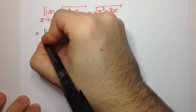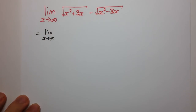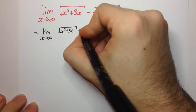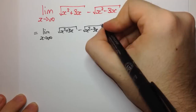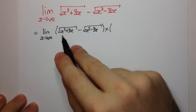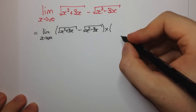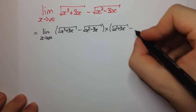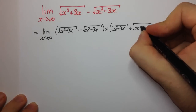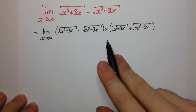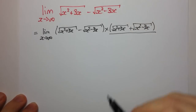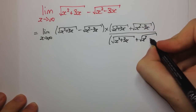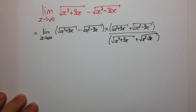What do I mean by that? Just like when you're rationalizing a fraction, we multiply the original function by the conjugate, which is just changing the sign in the middle. So we're going to be multiplying by the square root of x squared plus 3x, and now we're going to have a plus instead of minus, giving us the square root of x squared minus 3x. And of course, since we can't just multiply by something, we're going to have to divide by the same thing.